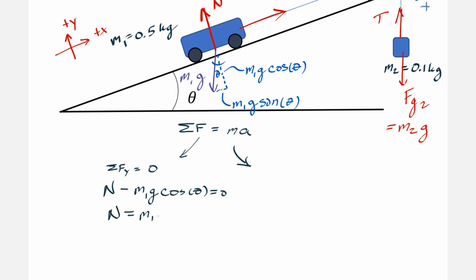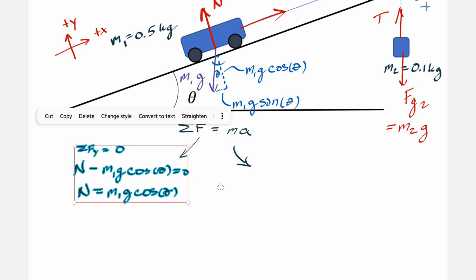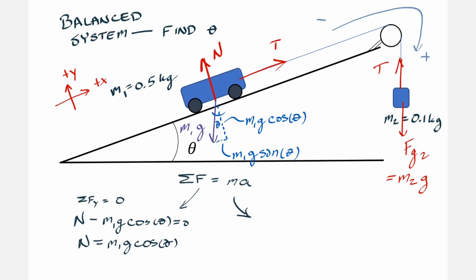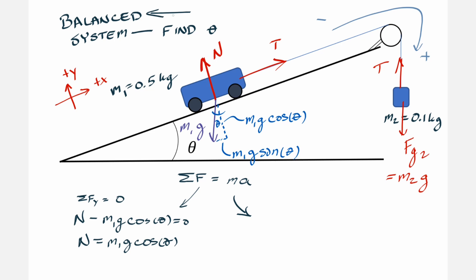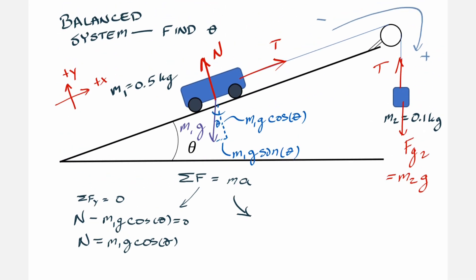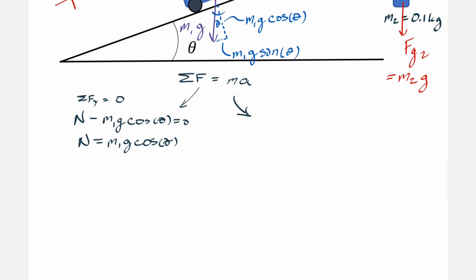I did the y-direction first, but as we'll see, it doesn't actually matter here. This system is a balanced system — there is no net motion. If there were motion, it would be along the path, but we're solving for a balanced configuration. In a balanced system, the forces are balanced and acceleration equals zero, so that's important to keep in mind.